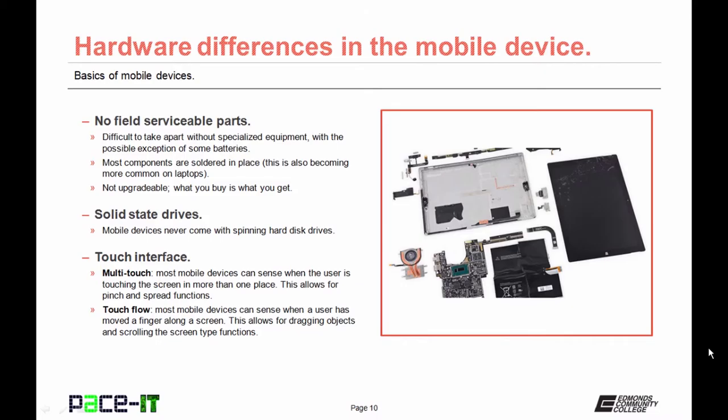Almost all mobile devices come with a touch interface, and that comes with several things involved. Most of these touch interfaces can sense when they're touched in more than one place, which allows for the pinch and zoom functions. Mobile devices also have touch flow — they can sense when a user has moved their finger along the screen, which allows for the dragging of objects and the scrolling of the screen.